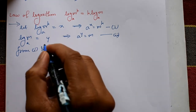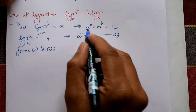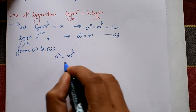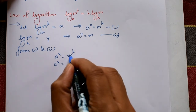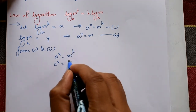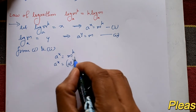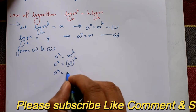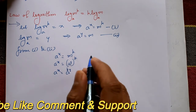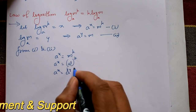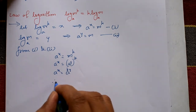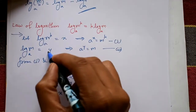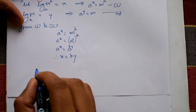From equation one and two: a raised to x is equal to m raised to k. Now m means a raised to y, so m raised to k means a raised to y raised to k, which is a raised to ky. Since the bases are same, therefore x is equal to k into y.